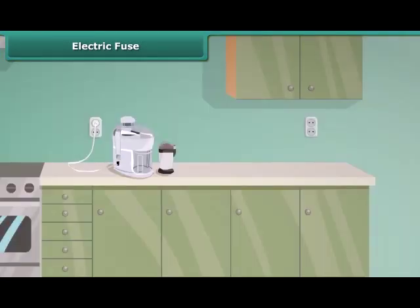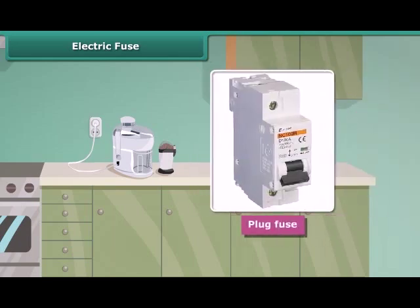Fuses of different kinds are used for different purposes. A plug fuse is used in our houses. The plug fuse consists of two parts: the porcelain casing and the porcelain grip. This fuse has a thin wire of tin and lead alloy, which has a low melting point. A cartridge fuse is generally used in electrical appliances.